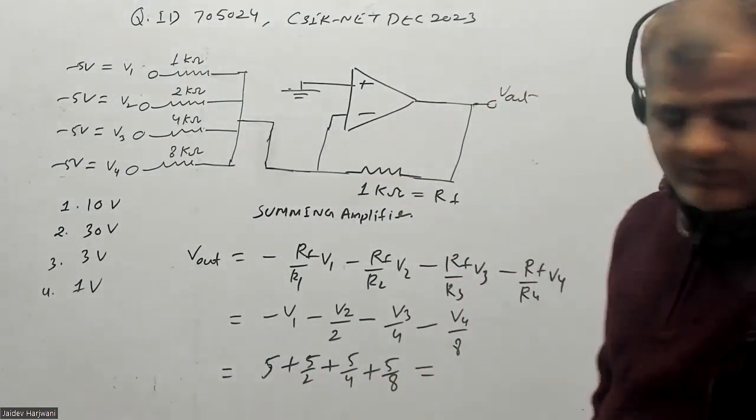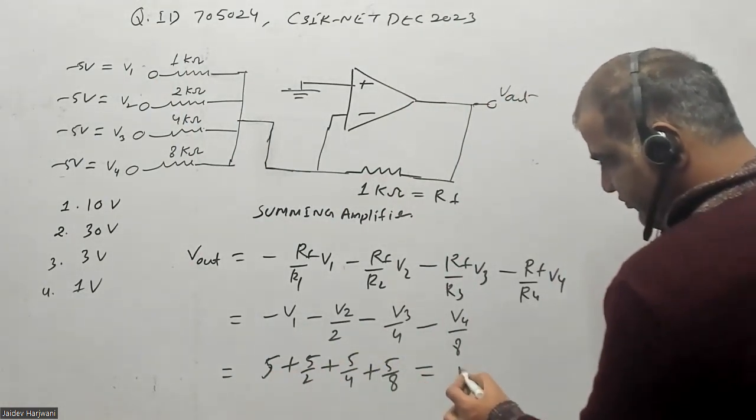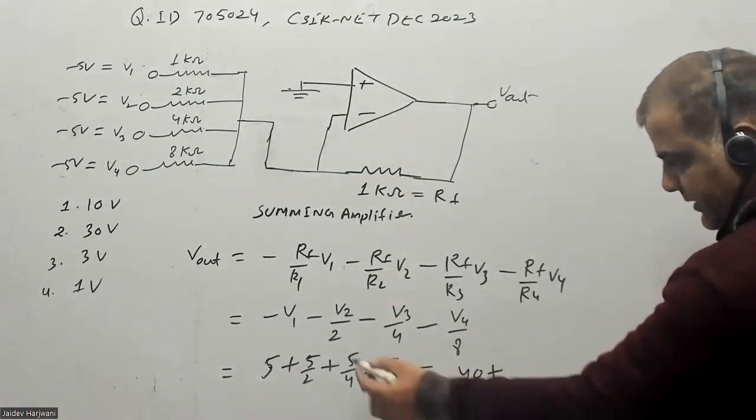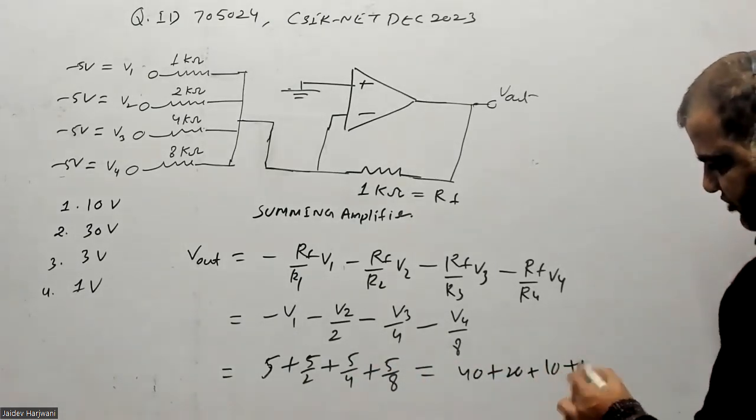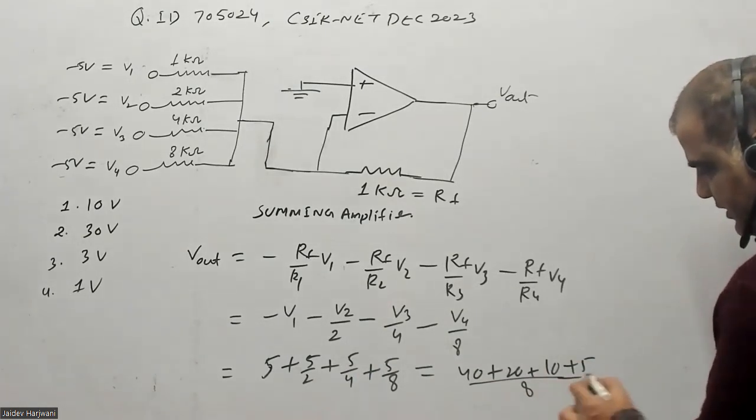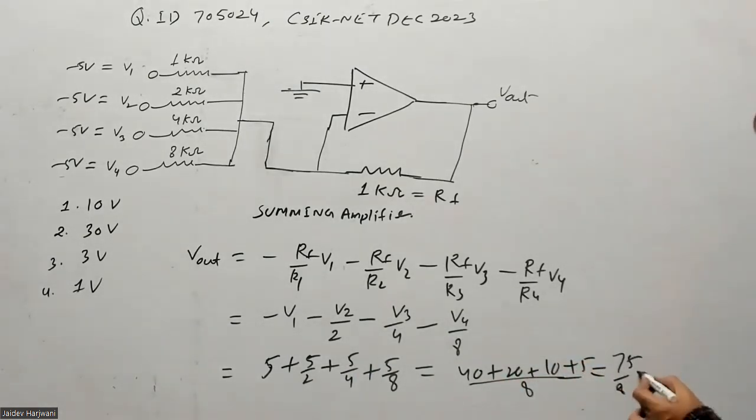Now we have to sum these. So this will come out, if you solve this one, this will come out 40 plus 20 plus 10 plus 5 divided by 8. And if you solve, 60, 70, 75 divided by 8. If you solve now this will come around 9.37 volts.